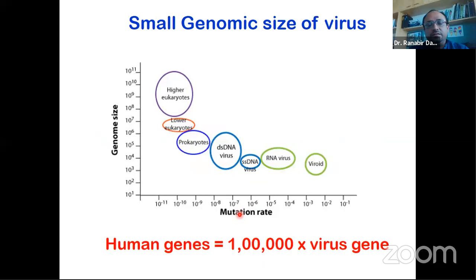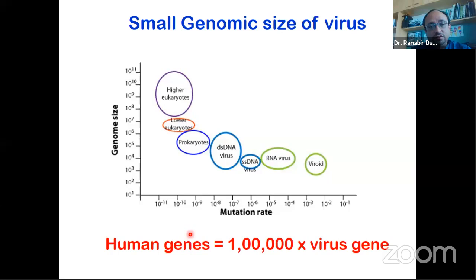If you look at the genomic size of viruses, it is much smaller compared to humans, vertebrates, or animals. Looking at the y-axis scale, it is almost 10 to the power of 5 times bigger in humans compared to viruses — that's 1 lakh times. Human genes are more than 1 lakh times larger than virus genes. The proteins made by humans compared to viruses are similarly scaled.